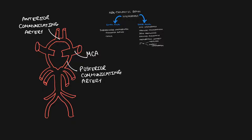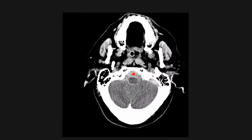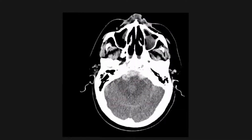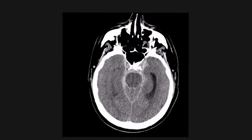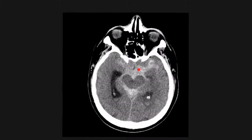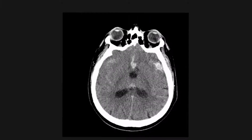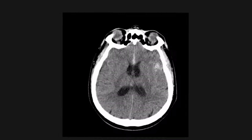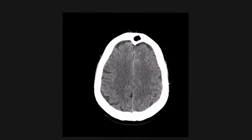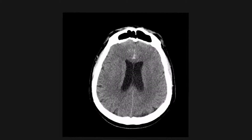Let's take a look at a few examples. Here we can see there is hyperdensity in the basal cisterns, also in the suprasellar cistern, and in the sylvian fissures. There is also some sulcal effacement. This is in keeping with an acute subarachnoid haemorrhage.